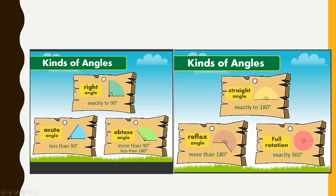Depending on the measure of the angles, angles are classified into different kinds. If the measure of the angle is exactly 90 degrees, it is called a right angle. If less than 90 degrees, it is called an acute angle. If more than 90 degrees and less than 180 degrees, it is called an obtuse angle. If exactly 180 degrees, it is called a straight angle. If more than 180 degrees, it is called a reflex angle.